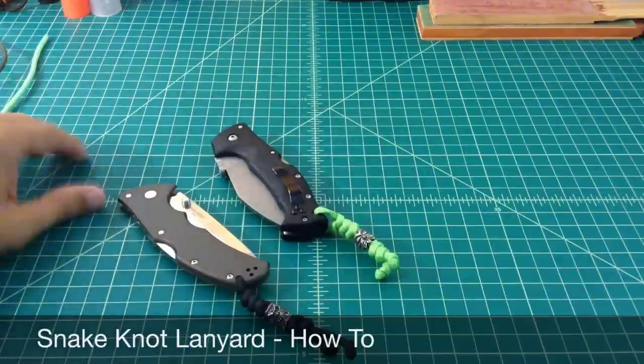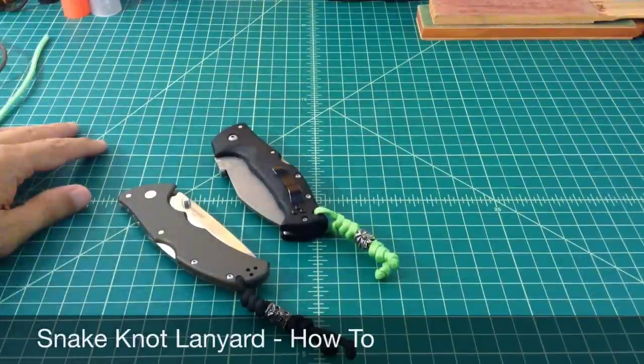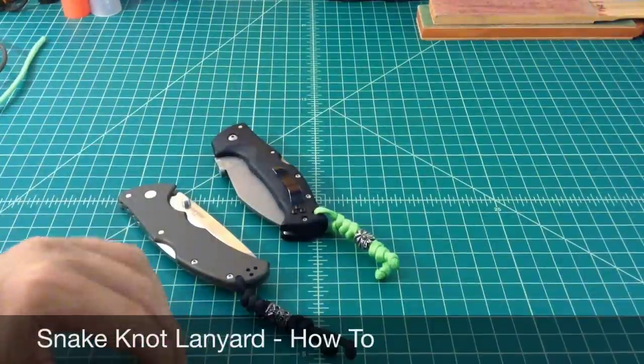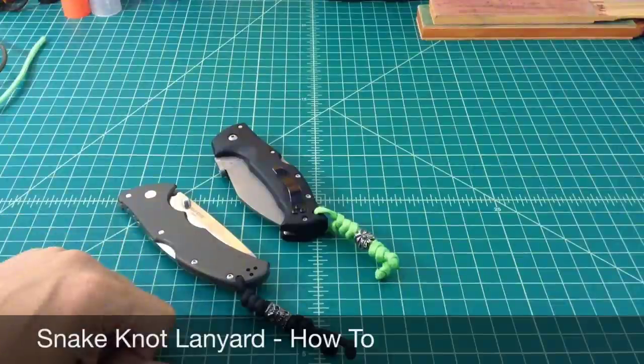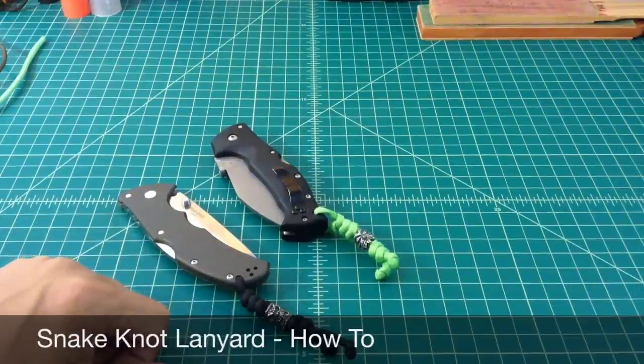So what I'm going to do here is a quick video showing how to tie the snake knot lanyard. I'm not going to put a bead on, so we're just going to tie just five, six knots on a knife and see how that goes.